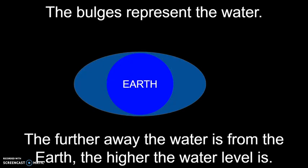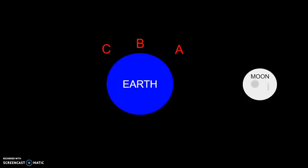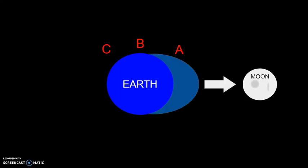In this model, the bulges will represent the water. The further away the water is from the earth, the higher the water level is. So if you see the bulge move out from the earth, the water level is higher and it's at high tide. That will be point A, that's point B, and that's point C. Now, the moon pulls point A the most of all the points, because the moon's gravitational pull forces the things closest to it more.